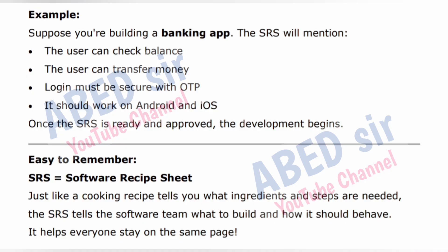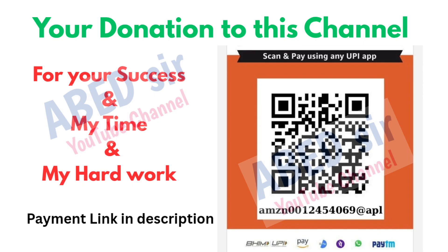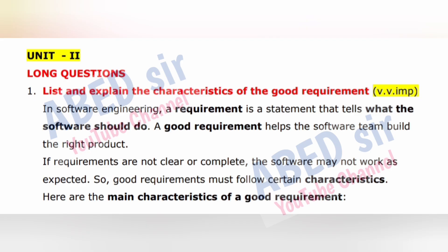Just like a cooking recipe tells you what ingredients and steps are needed, the SRS tells the software team what to build and how it should behave. It helps everyone stay on the same page. Next, Unit 2 important long questions. First important long question: List and explain the characteristics of a good requirement. In software engineering, a requirement is a statement that tells what the software should do. A good requirement helps the software team build the right product. If requirements are not clear or complete, the software may not work as expected. So, good requirements must follow certain characteristics.